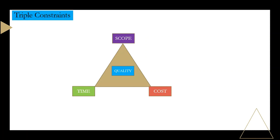The third thing is time — time is the third constraint. When you create a project, you will observe that in the Gantt chart you will have a start time and end time. A project has a start date and it has an end date. So you have to manage time, cost, and scope together, and make sure that your quality is up to the mark.